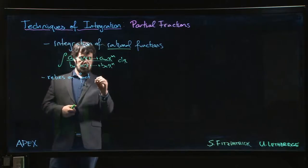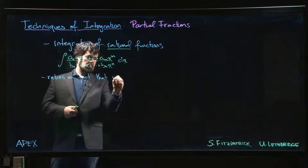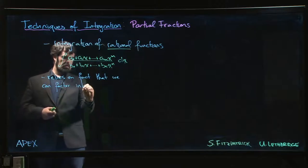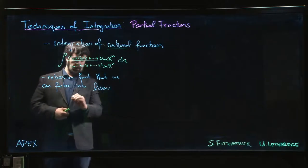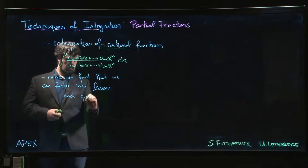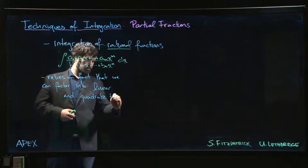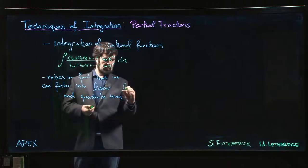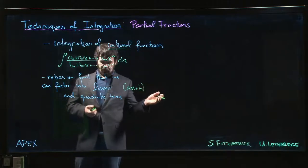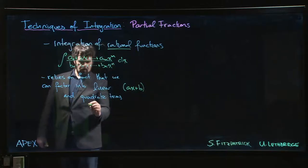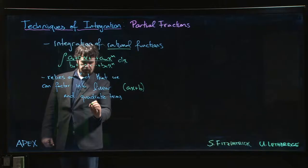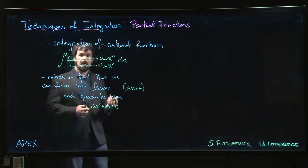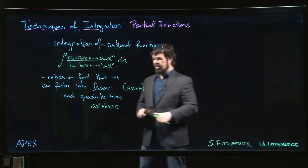What the partial fraction decomposition relies on is the fact that all polynomials can be factored into linear and quadratic terms. By linear term we mean factors of the form ax + b. Quadratic we mean factors of the form ax² + bx + c that are irreducible.